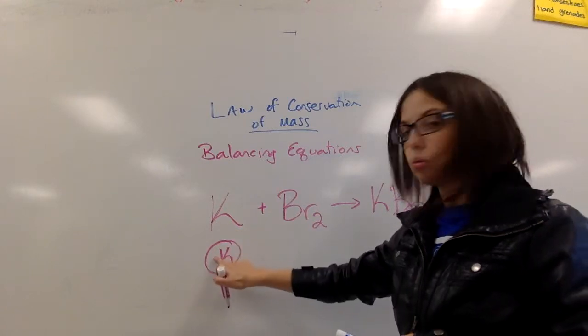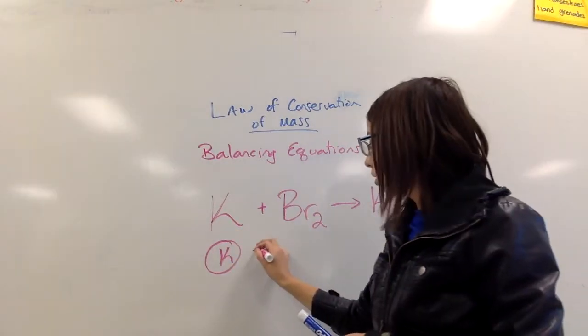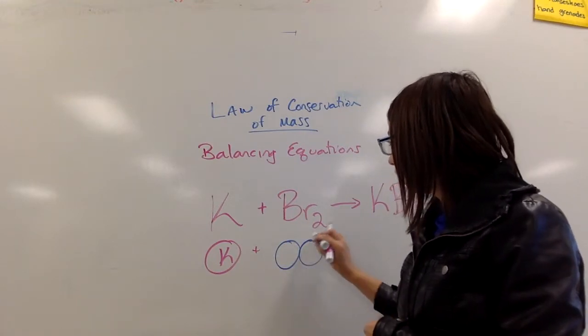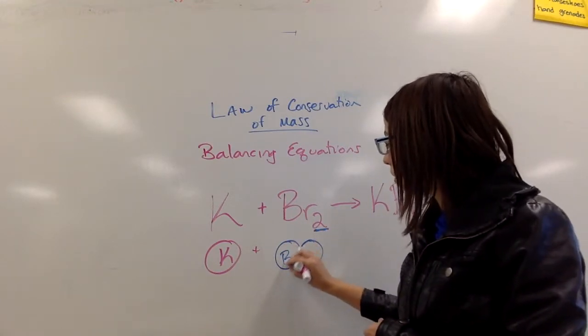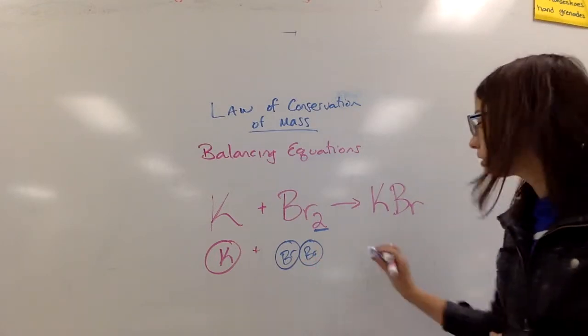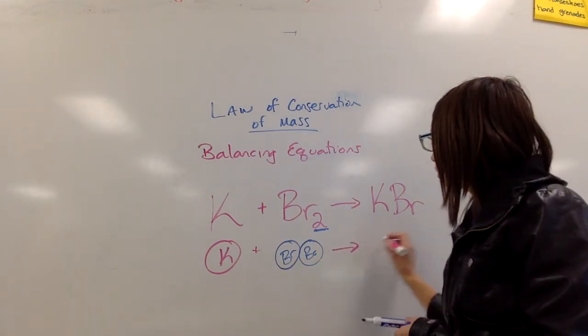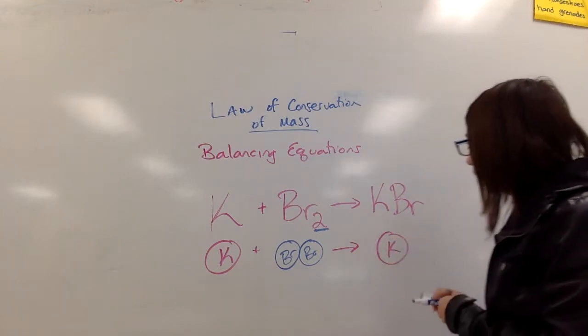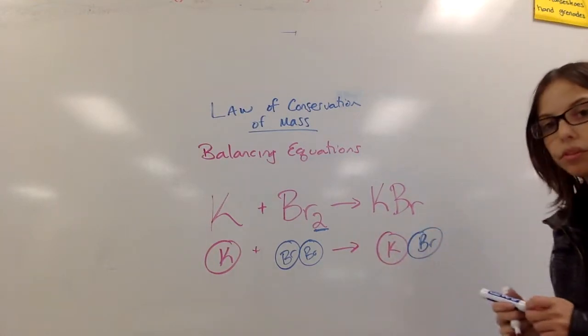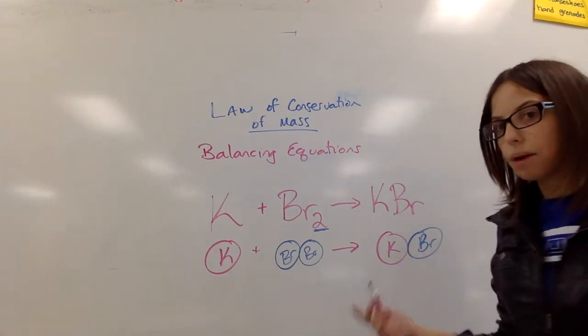So K, that's just one atom of potassium, plus a Br2. This two tells me that in one picture, I need two atoms of that. That's what that means. That will yield a KBr. Alright, so this is clearly not balanced as it is. You probably figured that out if you're able to draw the pictures.